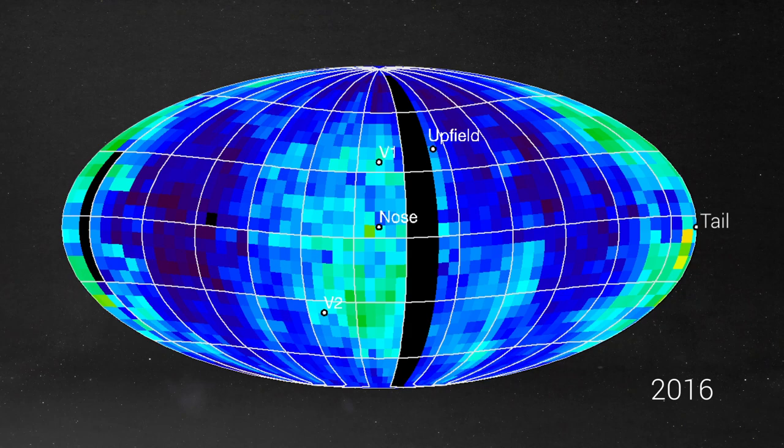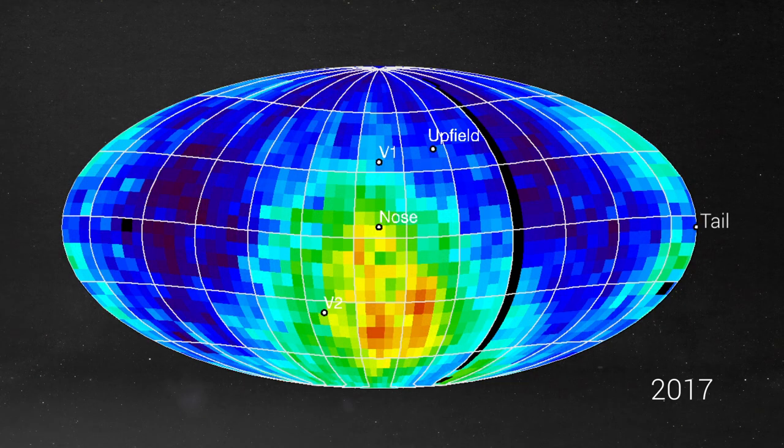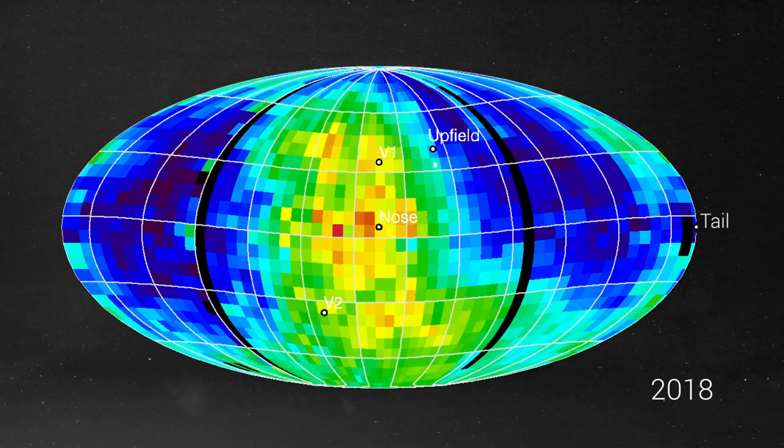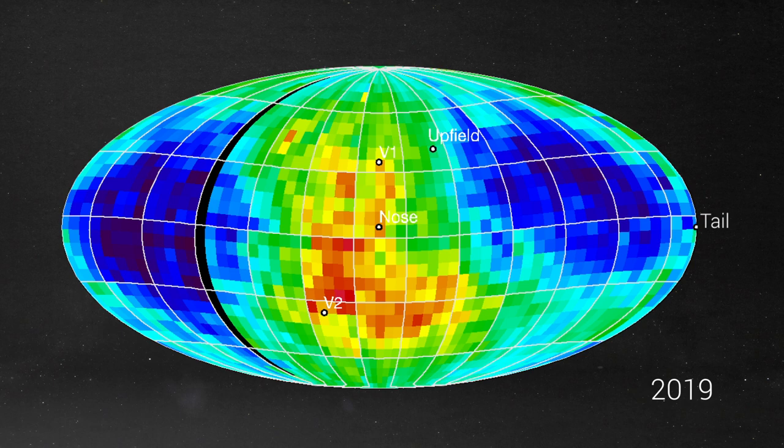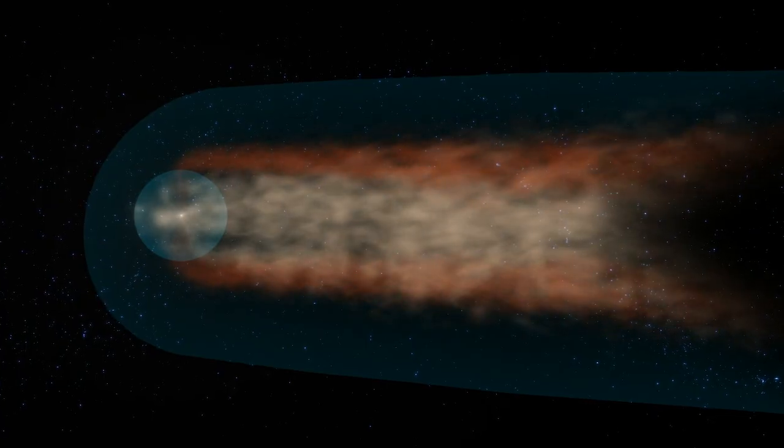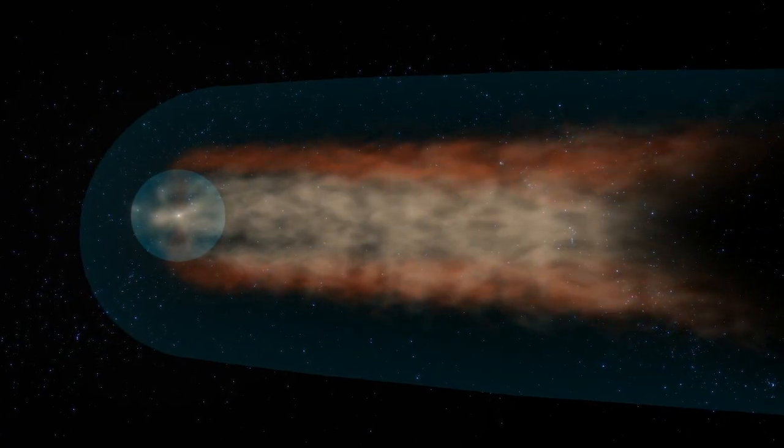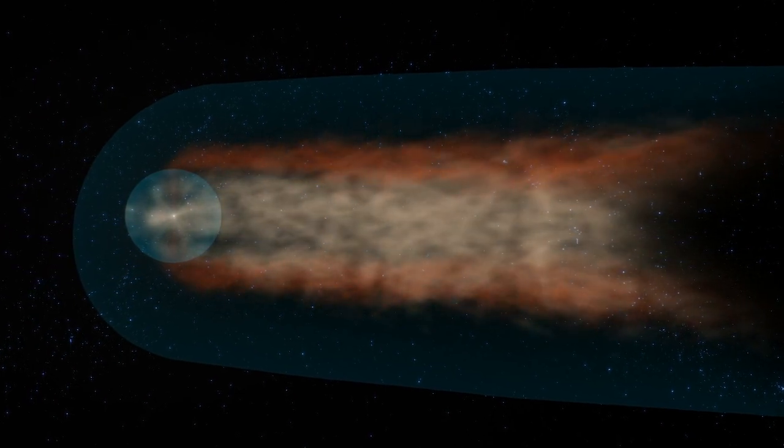If we compare the maps, ENAs from that big 2014 solar wind increase have returned from the nose, but they haven't returned from the tail yet, suggesting that the tail is much farther away from the sun than the nose. This indicates that the heliosphere looks more like a comet rather than a round bubble.